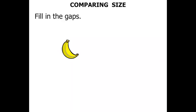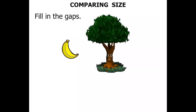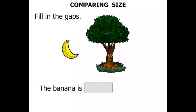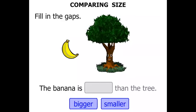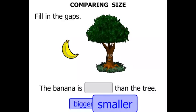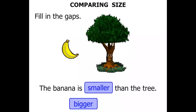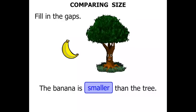A banana and a tree. That tree is blinking and looking at us. The banana is bigger or smaller than a tree. It's certainly smaller. The banana is smaller than a tree. Excellent.